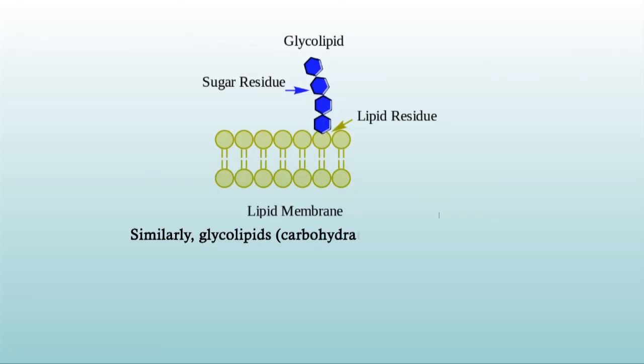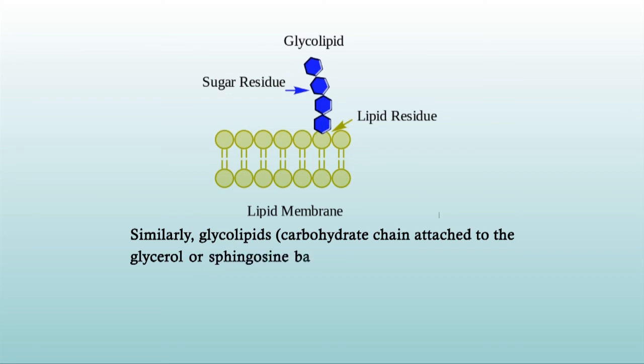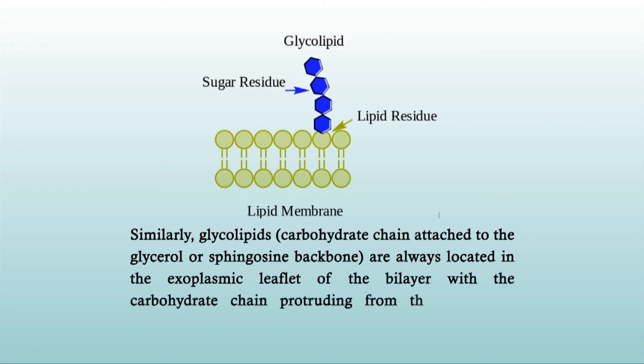Although many transmembrane proteins and lipid-anchored proteins diffuse freely in the bilayer, the mobility of integral membrane proteins is believed to be restricted by interactions with the cytoskeleton. In transmembrane proteins containing carbohydrate chains covalently linked to serine, threonine, or asparagine side chains of the polypeptide, the carbohydrate chains are always oriented in the exoplasmic domain. Similarly, glycolipids — with carbohydrate chains attached to the glycerol or sphingosine backbone — are always located in the exoplasmic leaflet of the bilayer, with the carbohydrate chain protruding from the membrane surface.